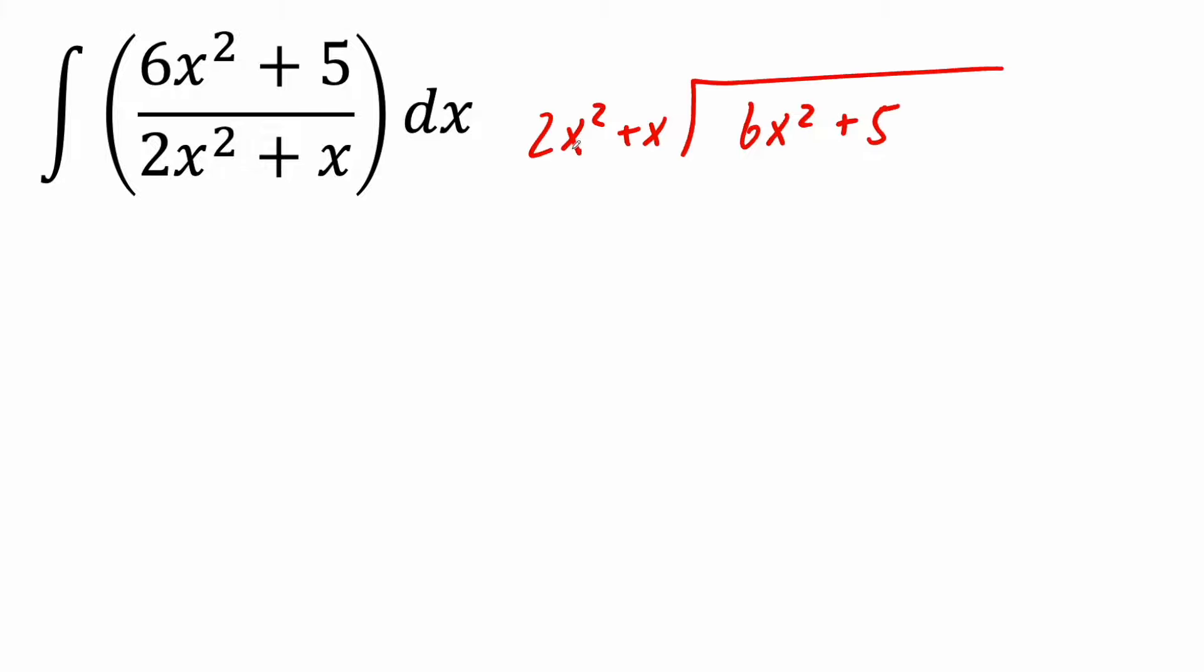First I'm going to do long division. So we think 2x squared times what gives us 6x squared? That's going to be 3, and so next we have to multiply it out. So 3 times 2x squared is 6x squared. 3 times x is 3x.